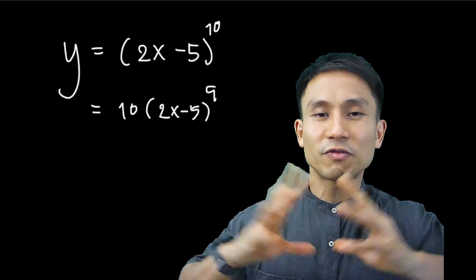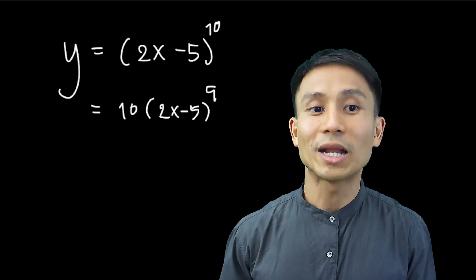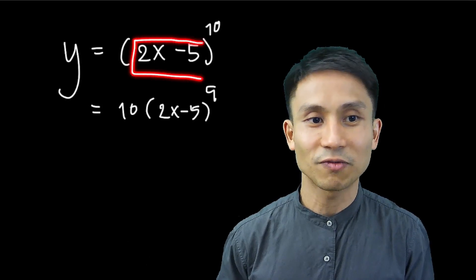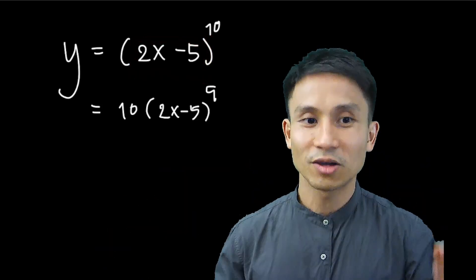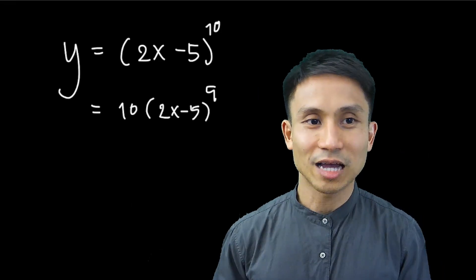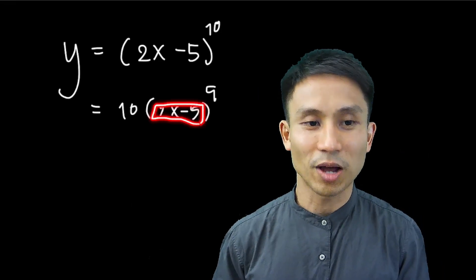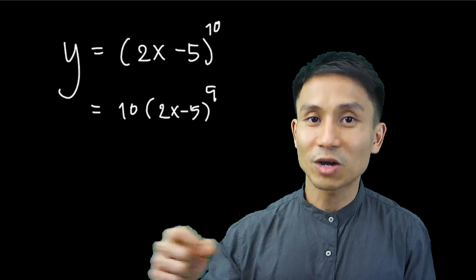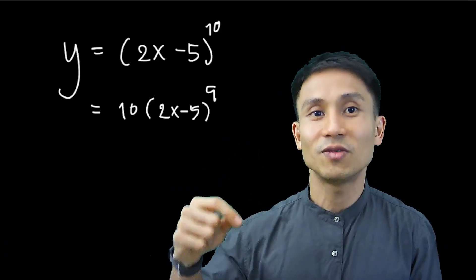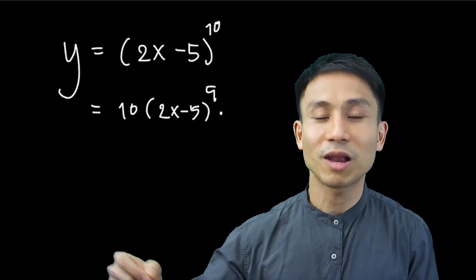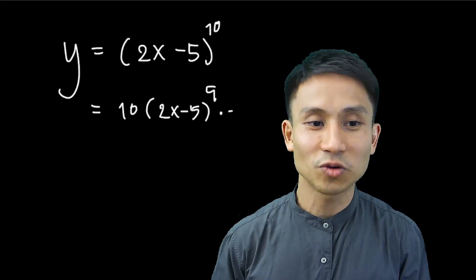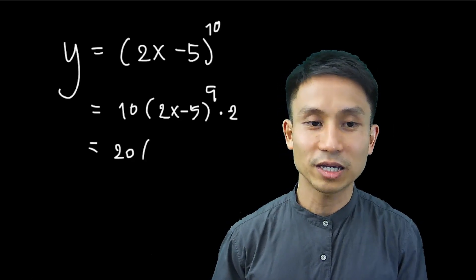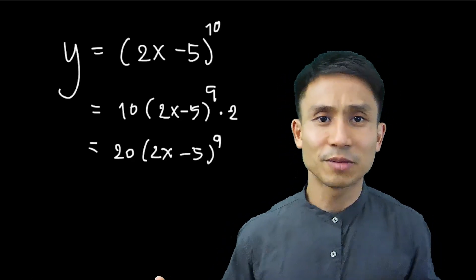After differentiating the outermost function, we go one layer inside — the linear function 2x-5. We differentiate it: differentiating 2x-5 gives just 2. The result from differentiating the inner part is then multiplied outside the whole term. So simplifying, we get 20(2x-5)^9. That's it!